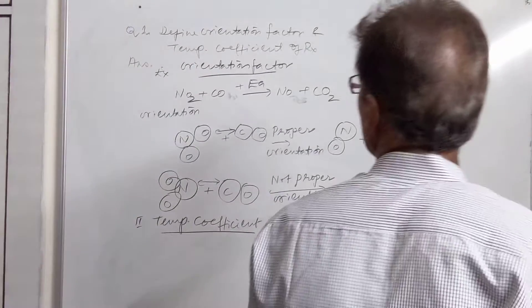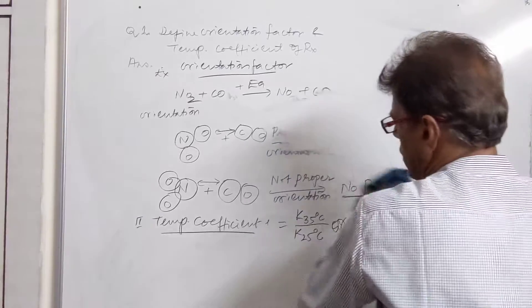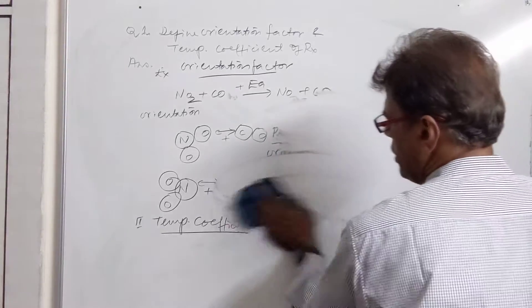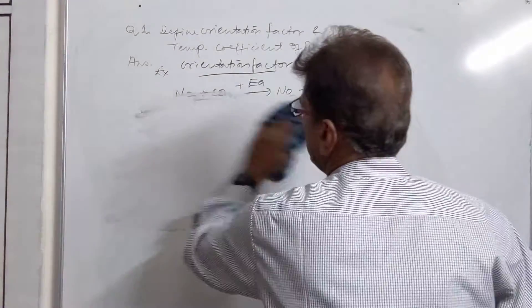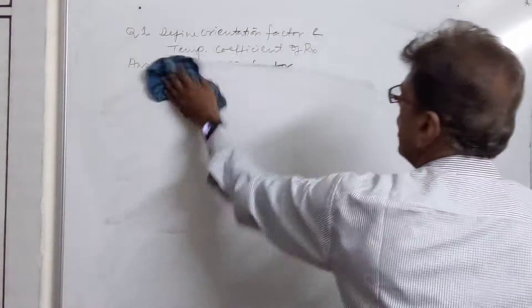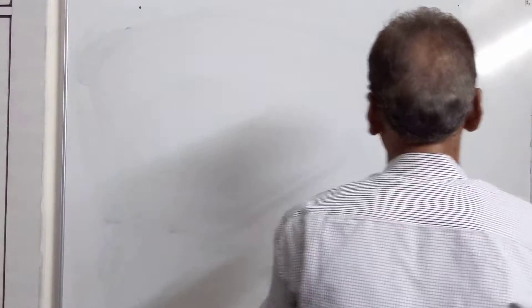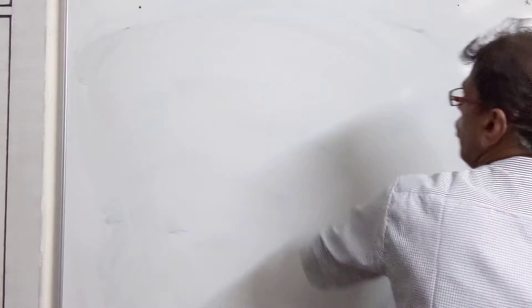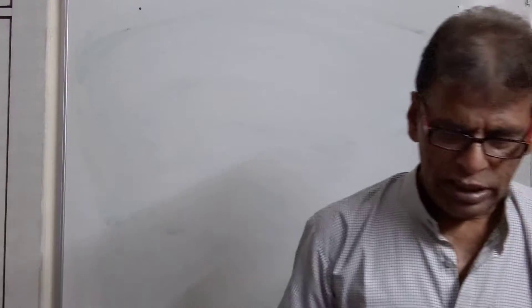So this was our first question — definition of orientation factor, what is temperature coefficient, and how they affect the rate of reaction. This was the first question from lecture number three of chemical kinetics. Now we come to the second question.